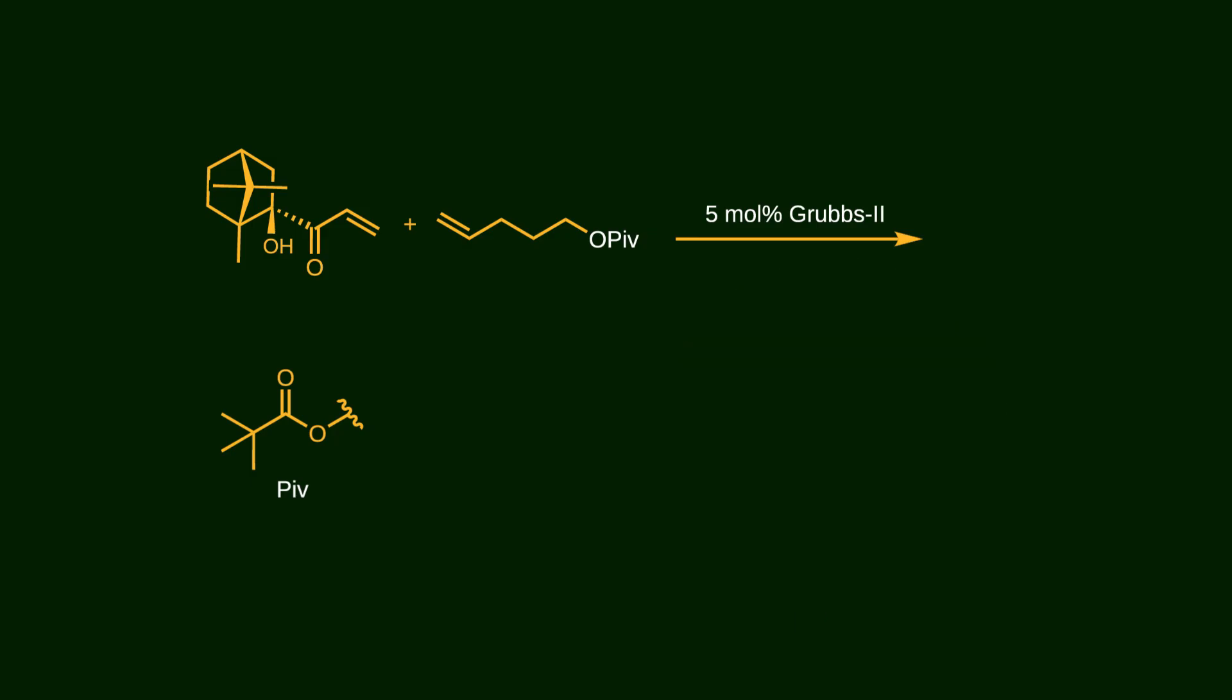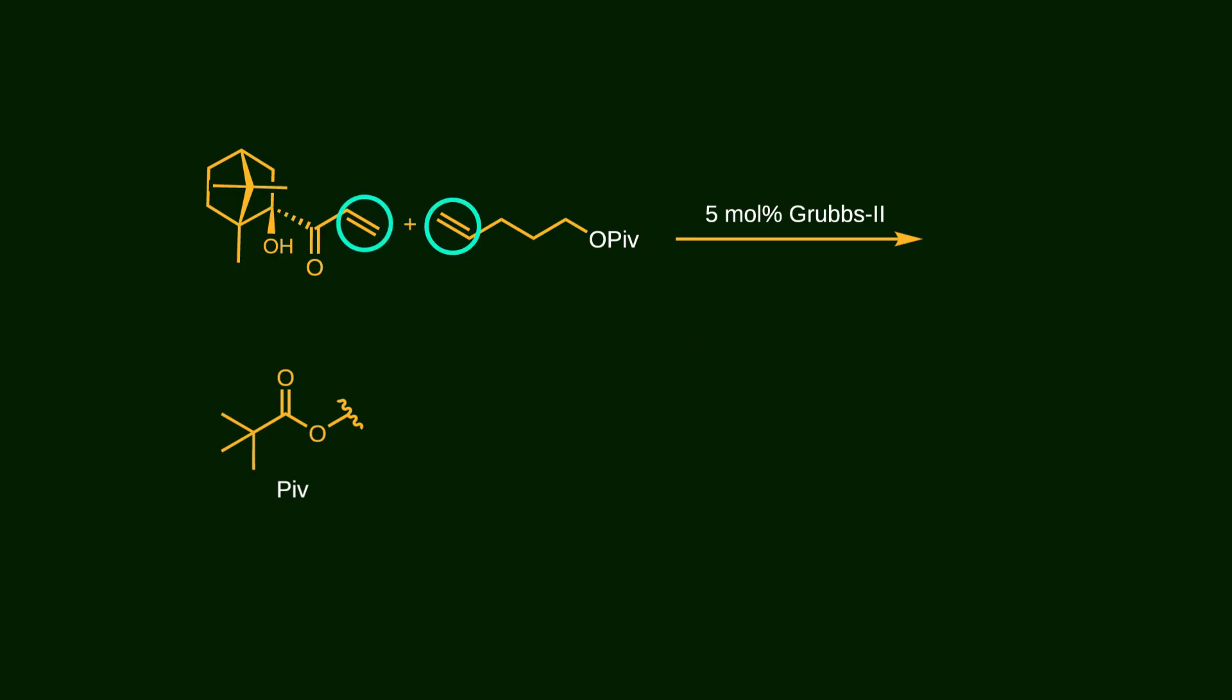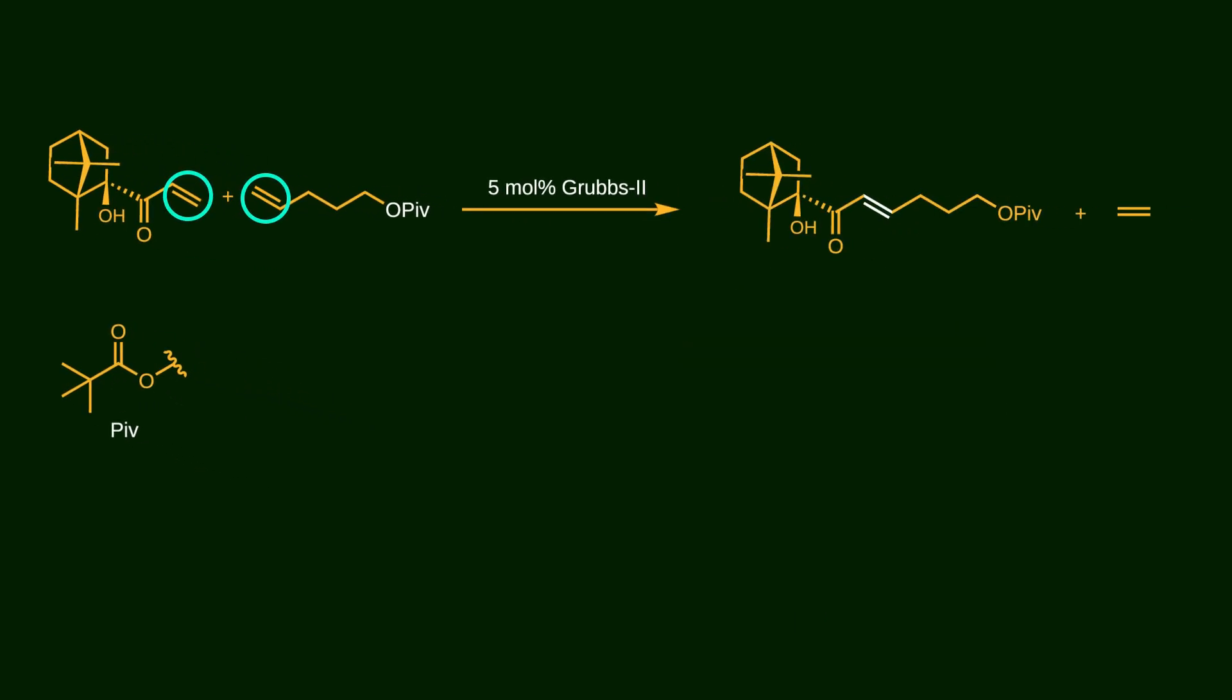Notice that two terminal alkenes are used in this metathesis reaction. So the formation of ethylene gas drives the reaction forward. The other product is a new alkene. What happens here is that the two separate alkenes are connected by the catalyst.